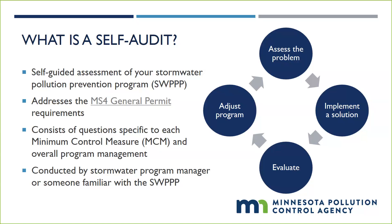The MS4 general permit has many requirements permittees must address that are intended to protect stormwater. A self-audit will evaluate your program based on, at a minimum, the MS4 general permit requirements, allowing you to reflect on the actions your stormwater program has carried out or plans to during the permit term. The vast majority of the requirements are detailed in the minimum control measures, or MCMs, of the MS4 general permit.